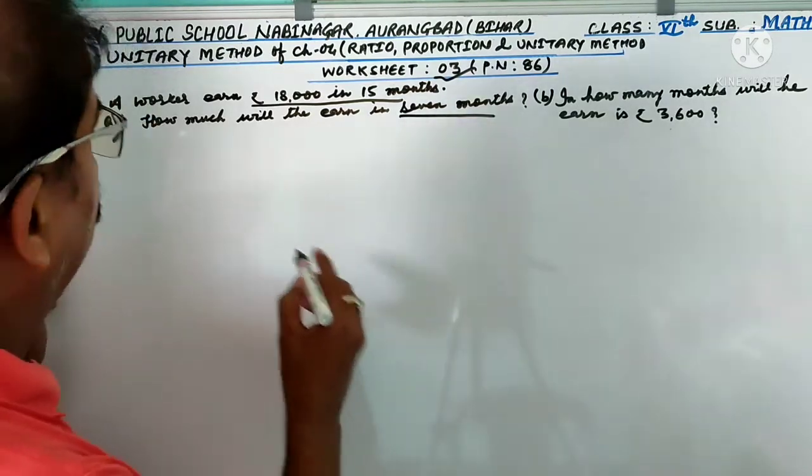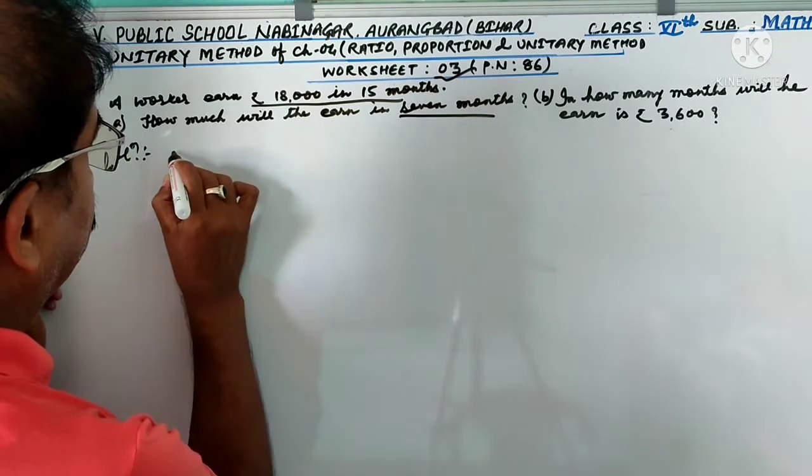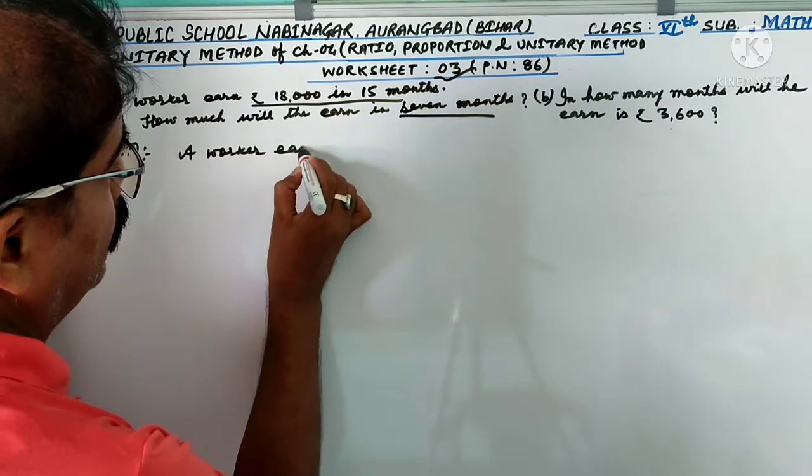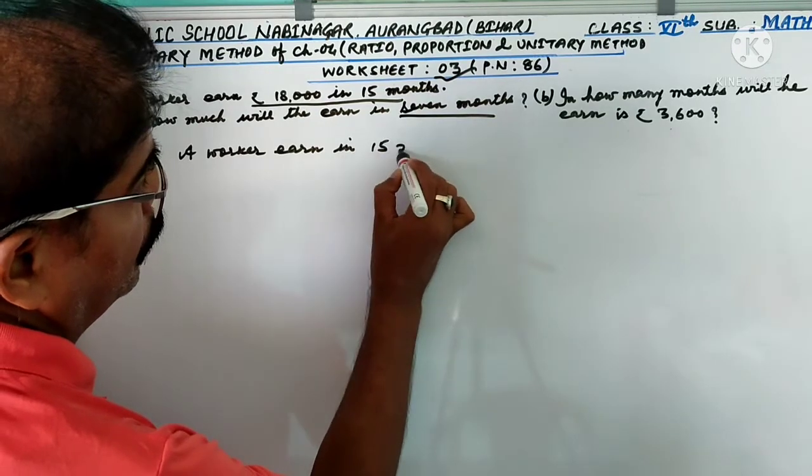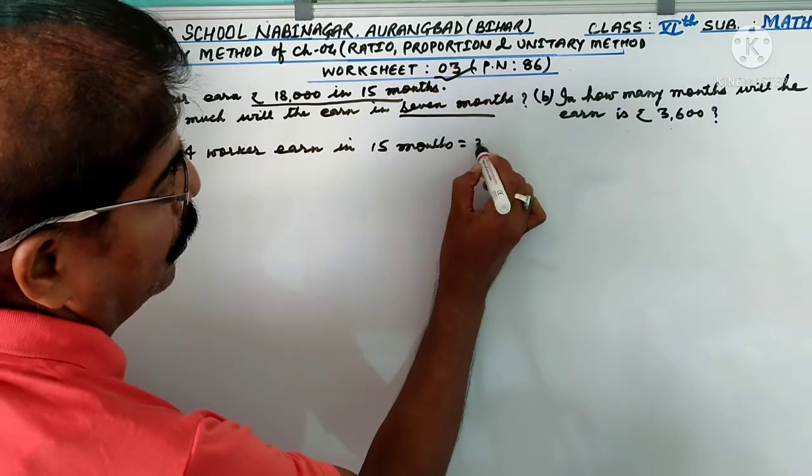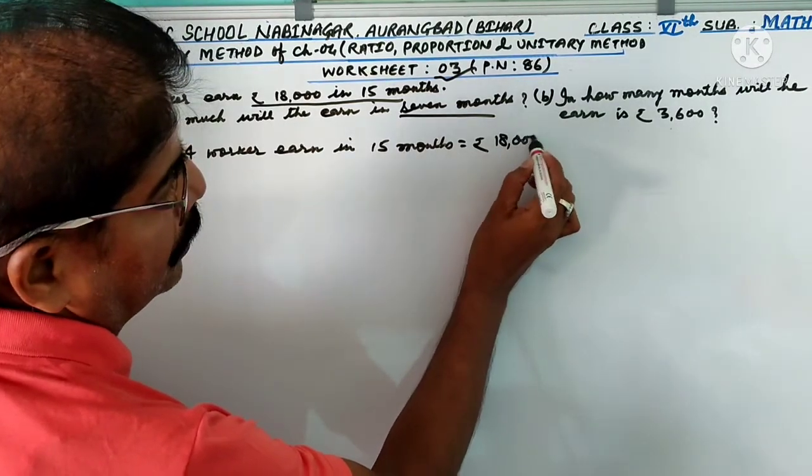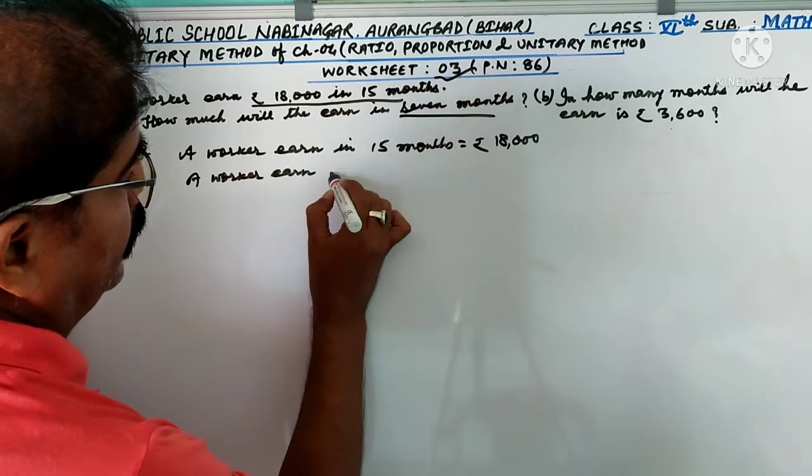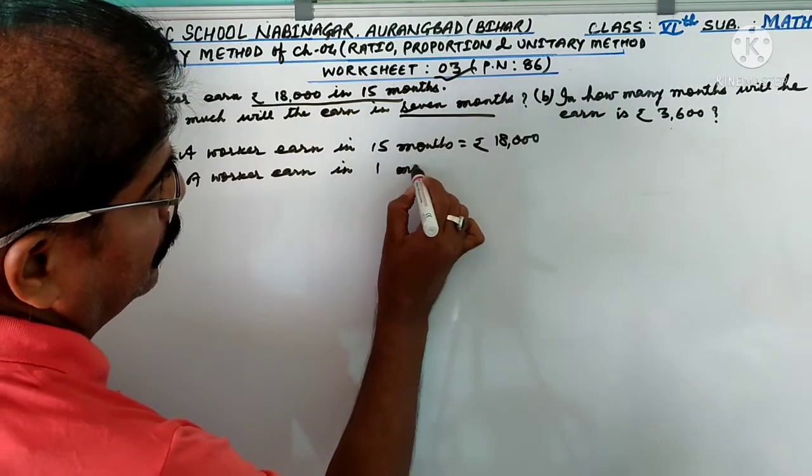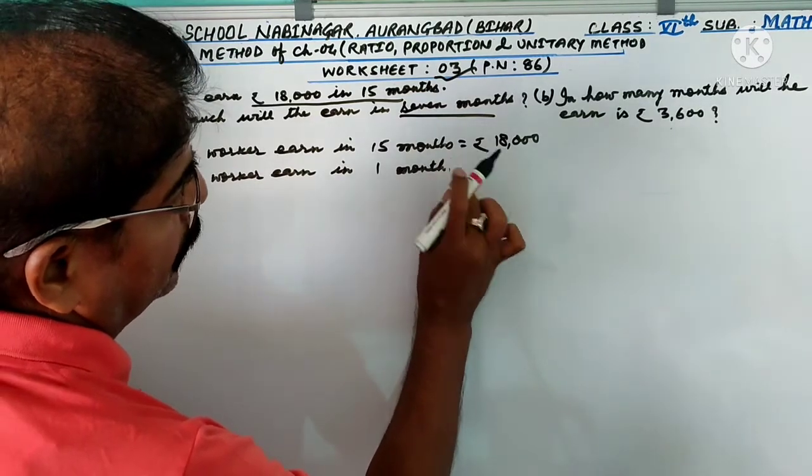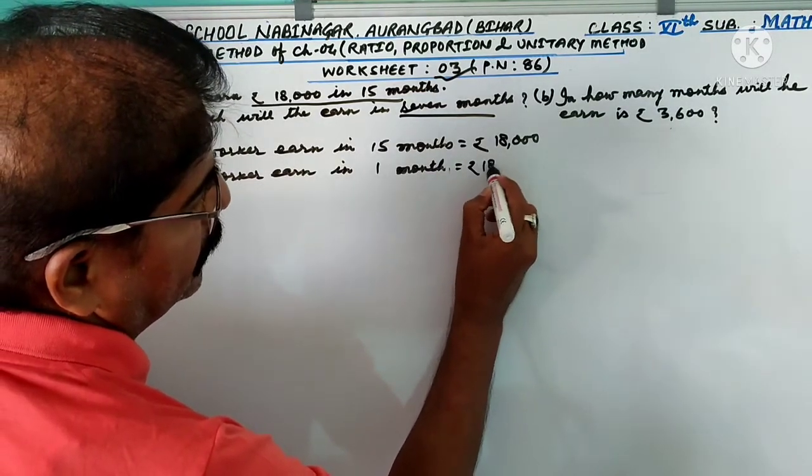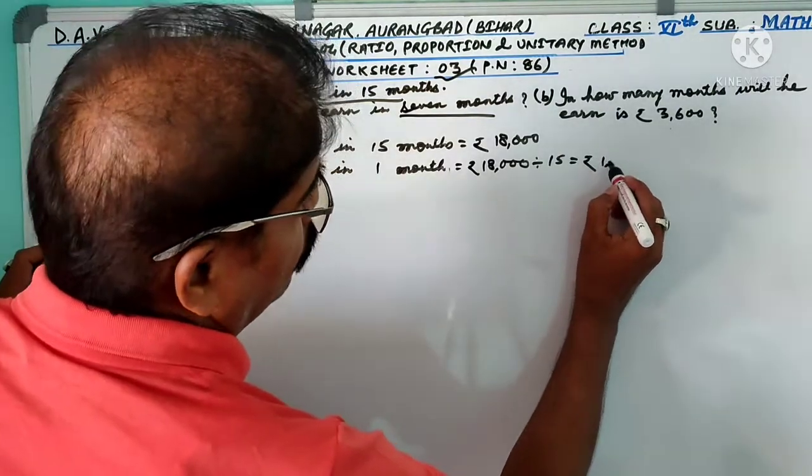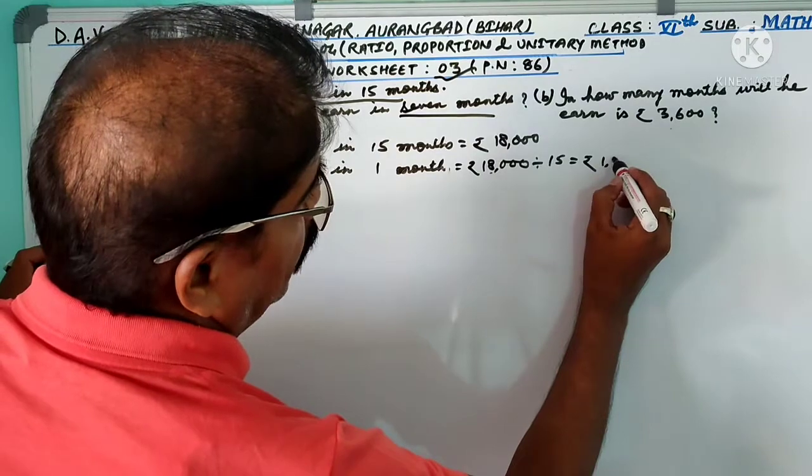Question 6 is: A worker earns Rs 18,000 in 15 months. How much will he earn in 7 months? Since a worker earned in 15 months equal to Rs 18,000, a worker earned in one month is equal to Rs 18,000 divided by 15. You get 15 once is 15, 3, 15 to 30, 1,200.